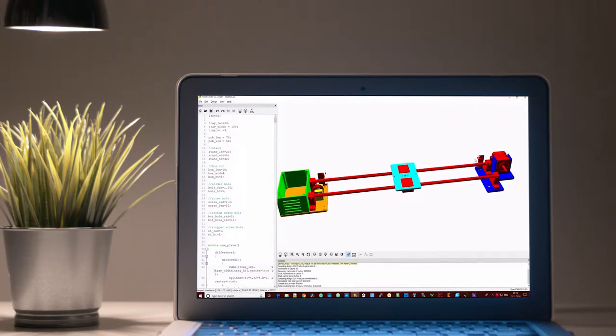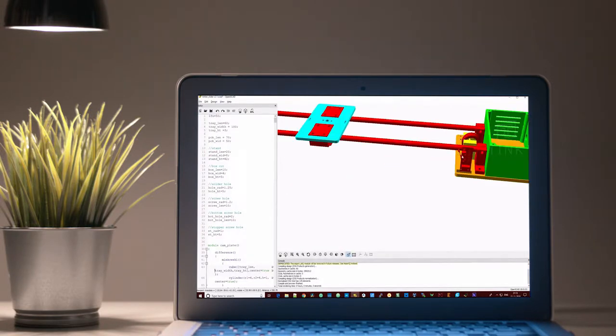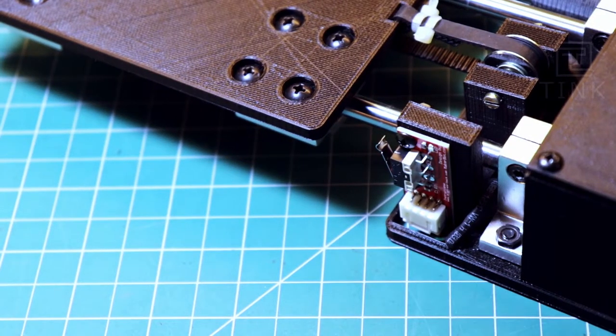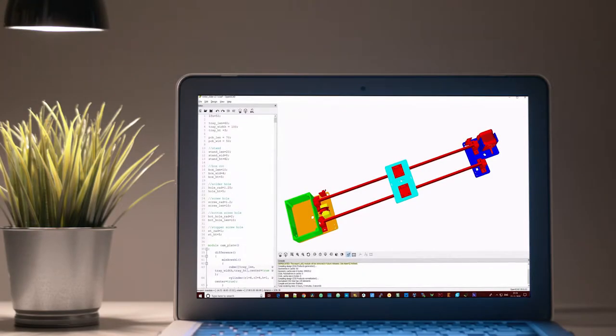For stopping the slider once it reaches the end, I am going to use an end stop module at both ends. There is a switch in the end stop module. Now when the slider reaches the end, it closes the switch to send a trigger to the microcontroller. Then the microcontroller sends a signal to stop the motor and rotate in the opposite direction to release the switch.